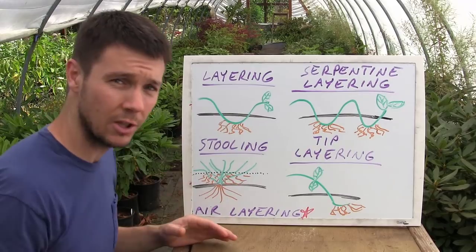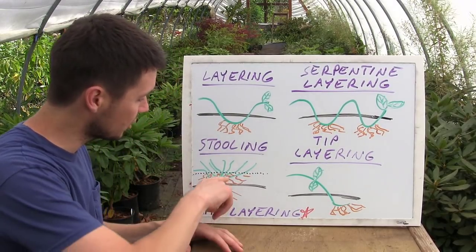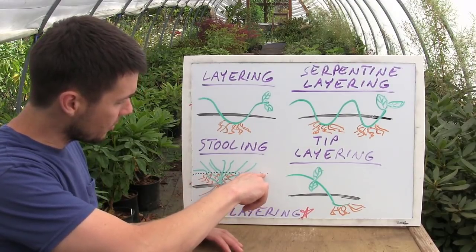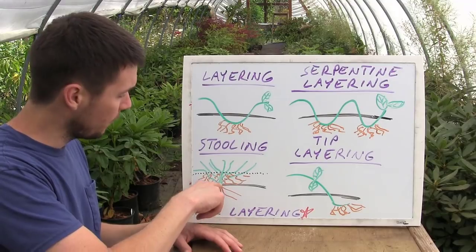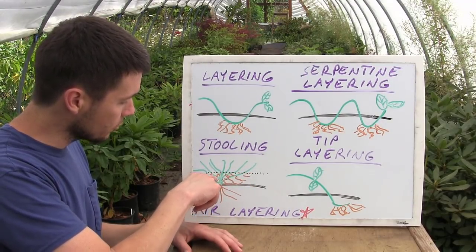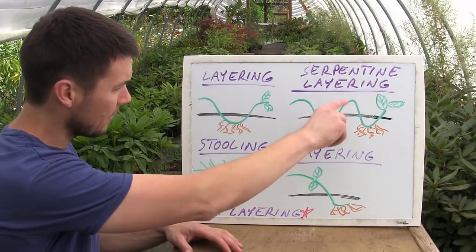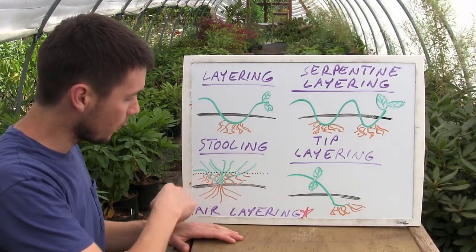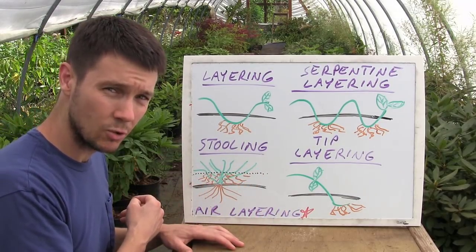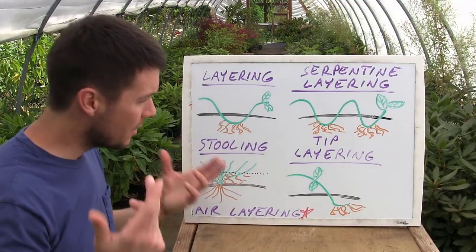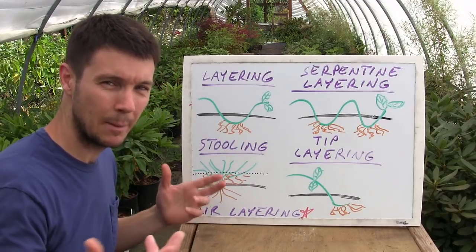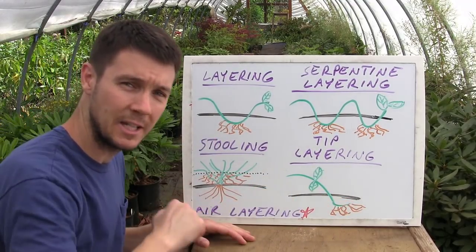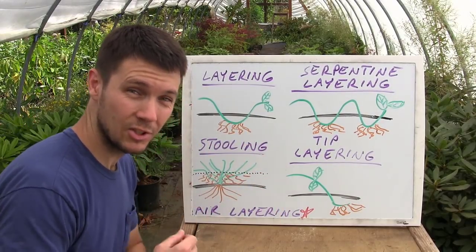With stooling, you've got lots of growth coming up close to the soil, and you pile maybe six inches to a foot of extra soil up over all those branches. All those branches start forming roots, and then you can dig down and cut them away — each becomes its own plant. Then there's tip layering, done with blackberries or berry plants: you take the tip, stuff it into the ground, it forms roots right out of the tip, and you cut it off for a whole new plant. And that brings us to air layering.